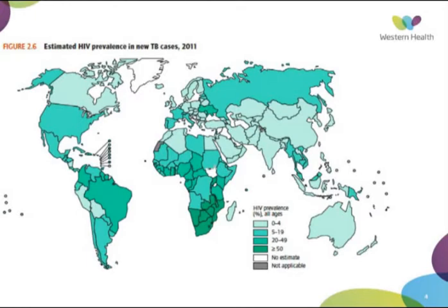HIV prevalence in TB is another big one to be aware of, particularly in Central Africa, South America, and Africa, where up to 50% of people with HIV can commonly have a TB co-infection. Also closer to home, PNG is a source — not that we see many patients from there, but it is right on our doorstep.